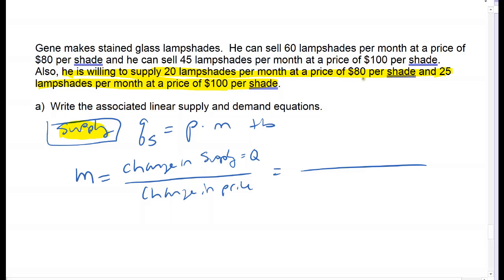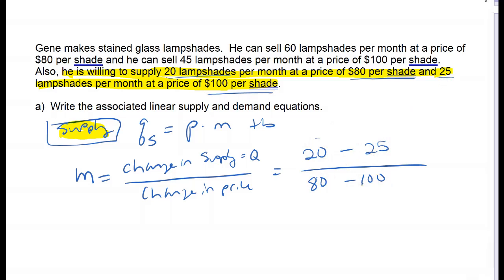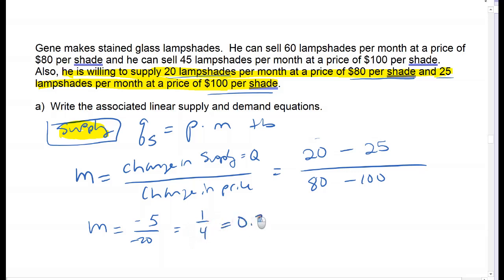The change in supply: at a price of $80 he's willing to supply 20 lampshades, and at a price of $100 he'll supply 25. So slope equals change in supply over change in price: that's (20 minus 25) over (80 minus 100), which is negative 5 over negative 20. The negatives cancel, and that reduces to 1/4 or 0.25. So my slope is 0.25.